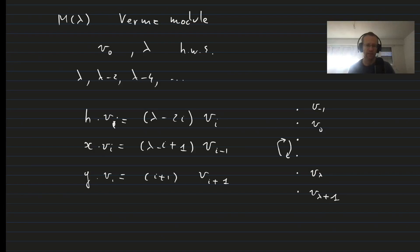Except when we have I equal to minus 1. If I is equal to minus 1, then Y doesn't go down. Or if I is equal to lambda plus 1, then we can't go up using X. All the other up and down arrows exist.